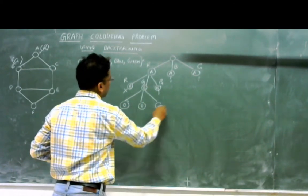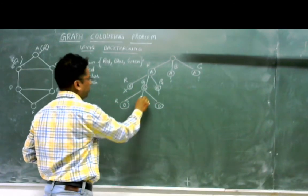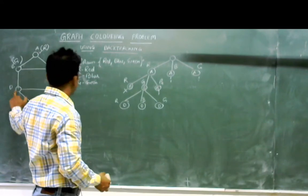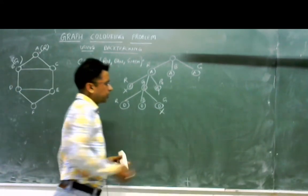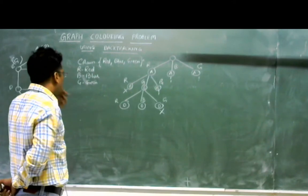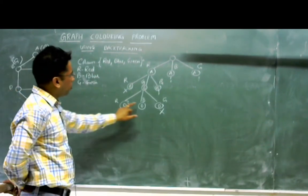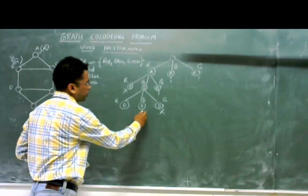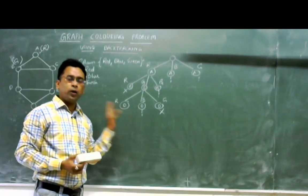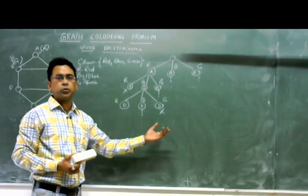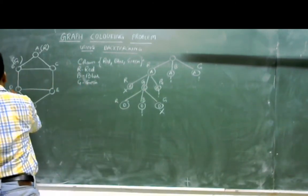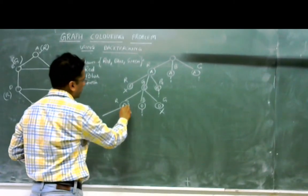For node D, the options are red, blue, and green, but D is adjacent to B which is green, so D cannot be green — that option is eliminated. I can color it either red or blue. The dotted lines show other options that could be explored, but I am just exploring one possible solution. I color node D as red. The next node is F.